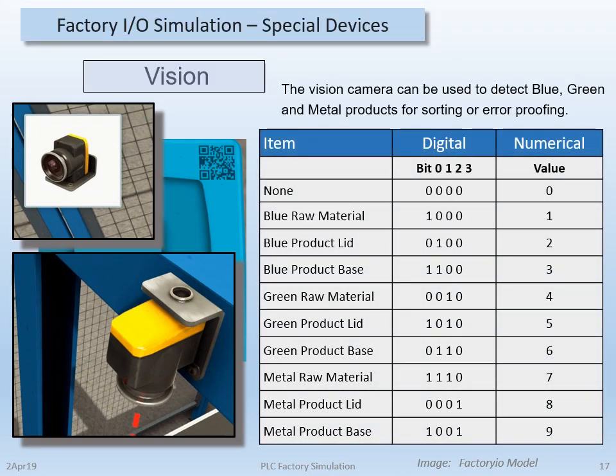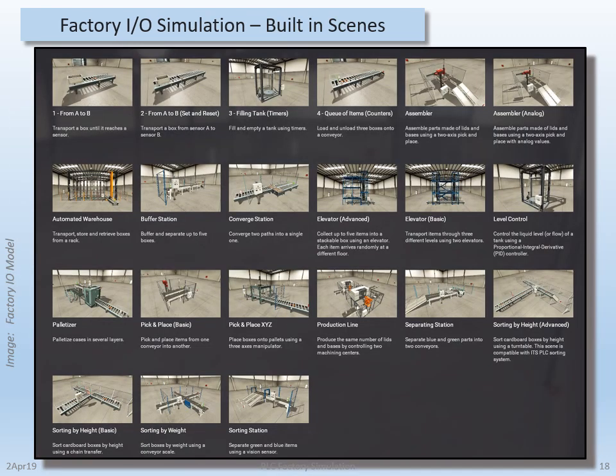The vision system consists of a vision camera and a barcode placed on the blue, green, and metal materials. When one of these objects is in the camera sensing area, the camera will output a digital or numeric value that represents the object. If you're just starting out, you have a wide variety of scenes to choose from. The pre-built models include everything from simply moving a box along a conveyor to sorting materials to filling a tank with fluids. There's also an automated warehouse, pick-and-place operation, and a CNC production cell including load and unload robotics. Some scenes, such as a CNC cell, have reduced complexity by needing only a run signal to begin operation.